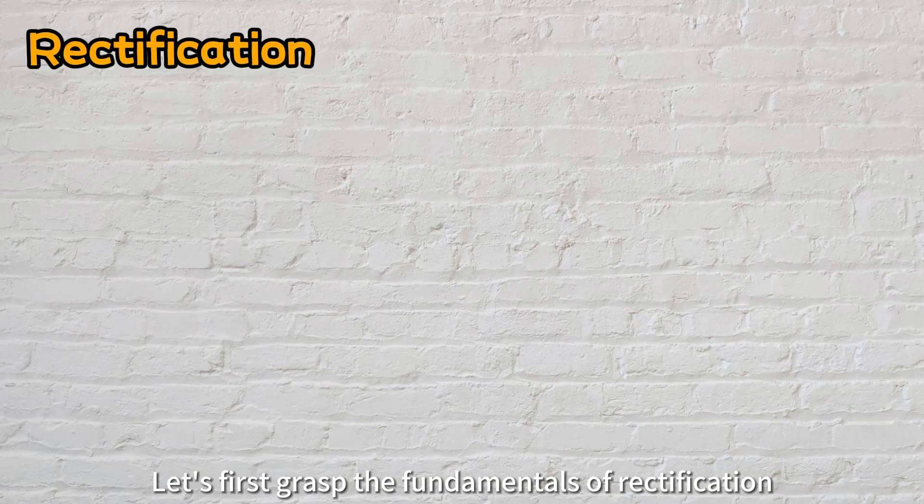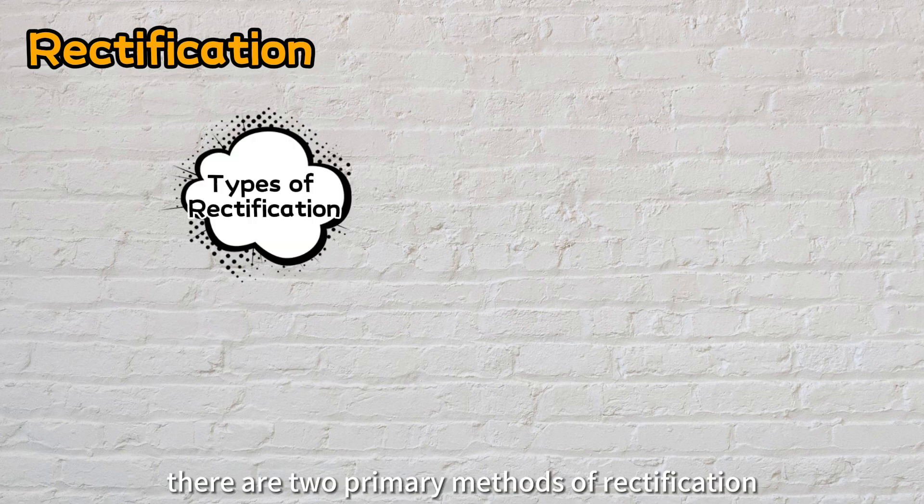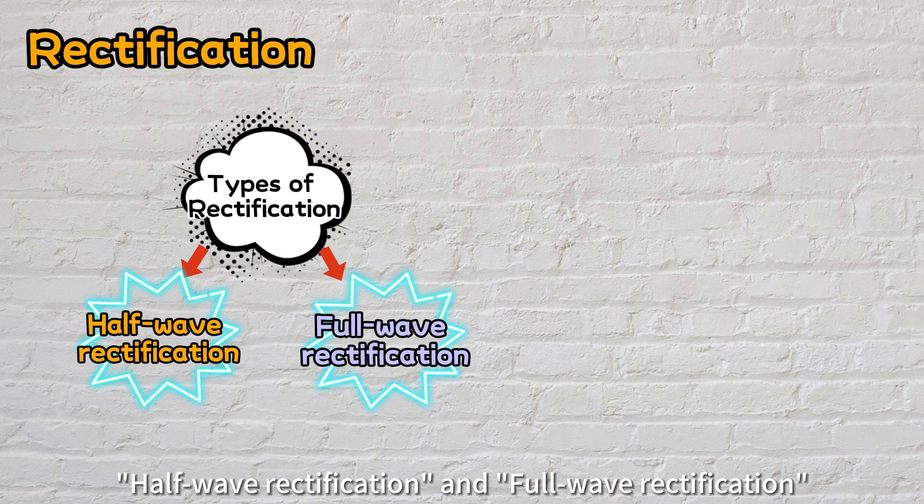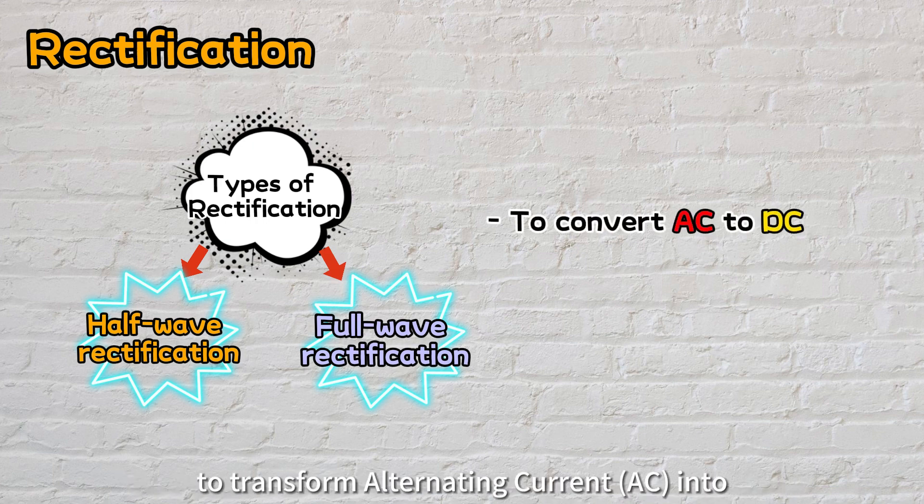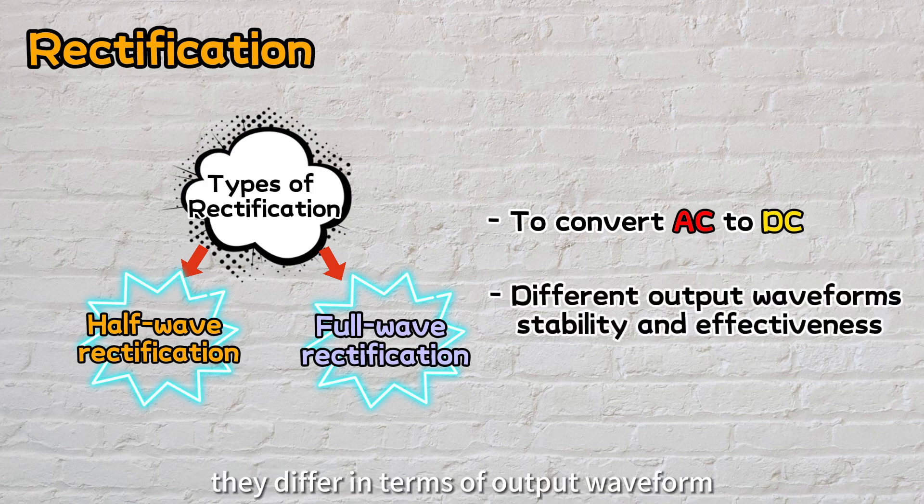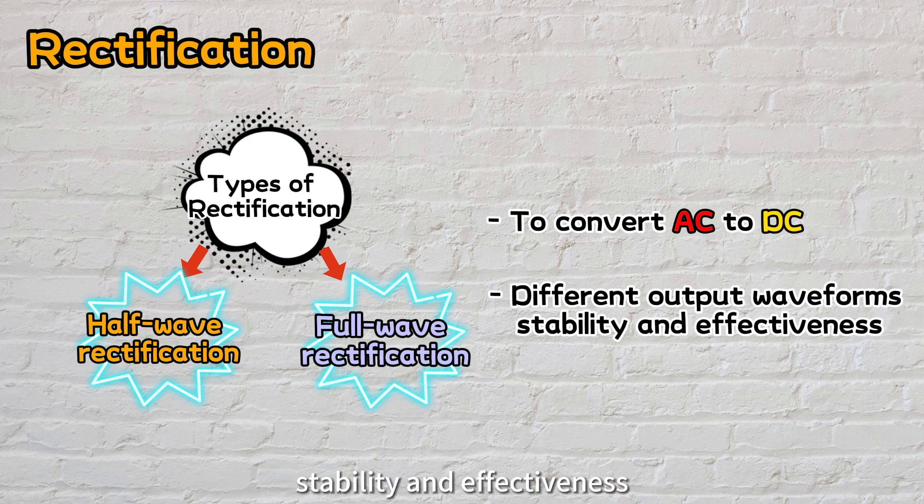Let's first grasp the fundamentals of rectification. In general, there are two primary methods of rectification: half-wave rectification and full-wave rectification. Both methods share a common goal to transform alternating current into a one-way flow of direct current. However, they differ in terms of output waveform stability and effectiveness.